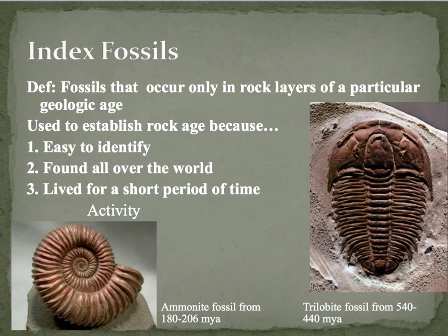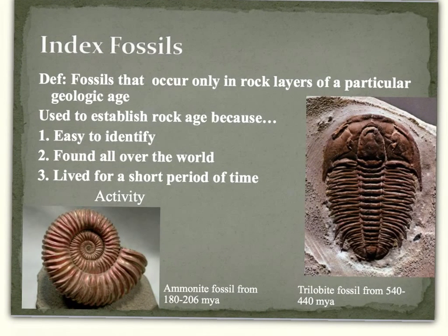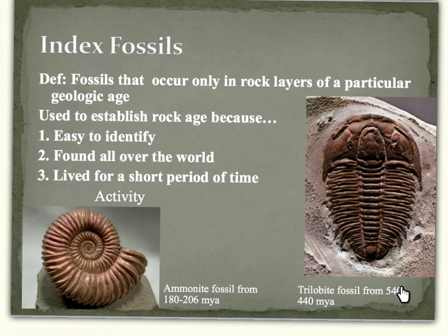Another special kind of fossil is an index fossil. These fossils are ones that occur in rock layers of a particular geologic age, and when we see them, we know how old all the other fossils around them are. These ones are easy to identify, found all over the world, and they have to have lived for a relatively short period of time — we're talking millions of years. So we have an ammonite fossil, which is used as an index fossil, so if we find another fossil next to it, we know it's about 180 to 206 million years old. Same thing with a trilobite fossil — when we see something located next to that, we can automatically assume that other fossil could be anywhere from 440 to 540 million years old.